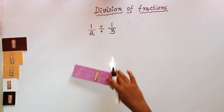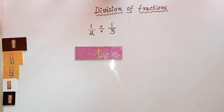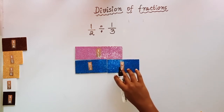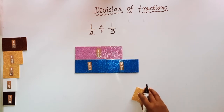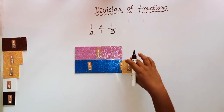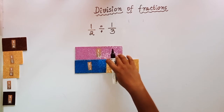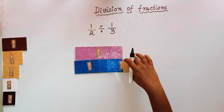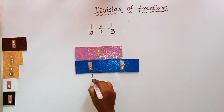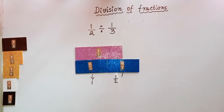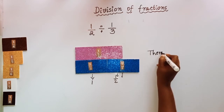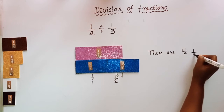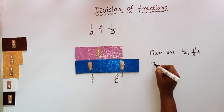Now: 1/2 divided by 1/3. Take 1/2. How many 1/3s are there in 1/2? If I place 1 one-third it fits partially, and if I keep 2 one-thirds it becomes a little longer. So I think half of 1/3 fits in 1/2. Yes — half of 1/3 is there in 1/2. So how many 1/3s are there? 1 and a half. There are 1 and a half 1/3s in 1/2.